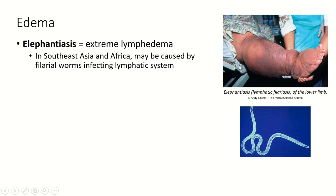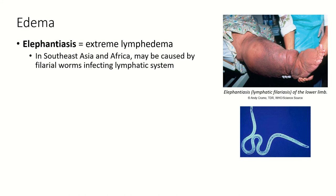Extreme lymphedema is called elephantiasis, where the legs swell enough they look like elephant legs. In certain parts of the world, there is a parasitic worm called the filarial worm — a little nematode — that infests the lymphatic system, multiplies, and creates blockage, making extreme lymphedema a sign of filarial worm infection. Filarial worm infections are becoming much less common, partly because of the work of former President Jimmy Carter, who helped fund efforts that have eliminated filarial worms from parts of the world.